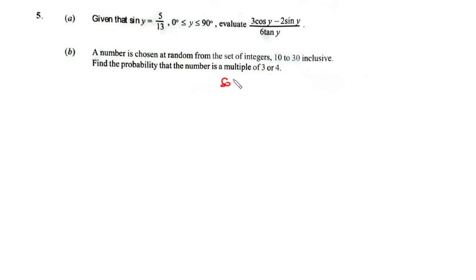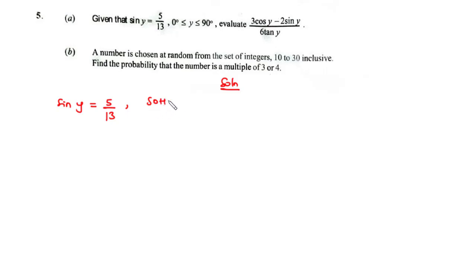Let's solve the A part first. This is a problem on trigonometry. From the question, we are given sine y to be 5 over 13. To evaluate this, we need to apply SOH-CAH-TOA. We have SOH, CAH, and TOA. Let's use this to find cos y and then tan y.